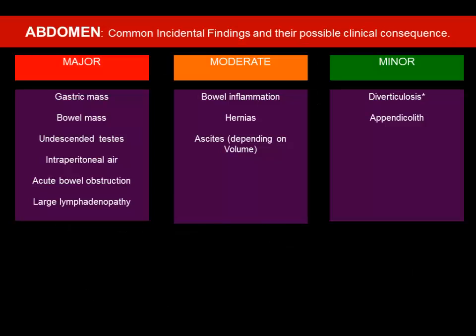For the abdomen, on unenhanced CTs it is quite challenging to identify findings unless you really look for them. In the lungs it is quite easy, but in other areas within the abdomen and pelvis it is challenging on unenhanced CT. You need to look for gastric mass, undescended testis, and acute bowel obstruction. These findings are based on PET-CT data, not SPECT-CT. Ascites will be quite easy to identify; diverticulosis is more commonly seen on PET-CT.